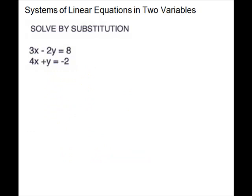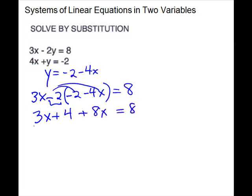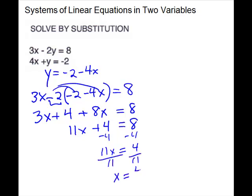To solve this system of equations by substitution, we will have to isolate a variable. In the second equation, I will isolate the y by subtracting the 4x. So y equals negative 2 minus 4x. Substitute that expression into the first equation for y: 3x minus 2 times negative 2 minus 4x equals 8. Distribute: 3x plus 4 plus 8x equals 8. Like terms together: 11x plus 4 equals 8. Subtract your 4, so 11x equals 4. Divide by 11, so x equals 4 elevenths.